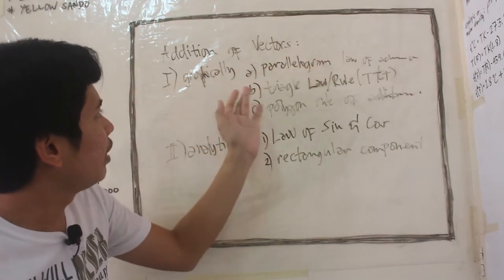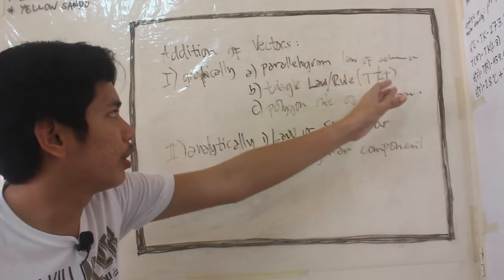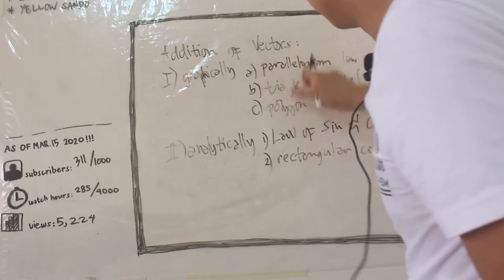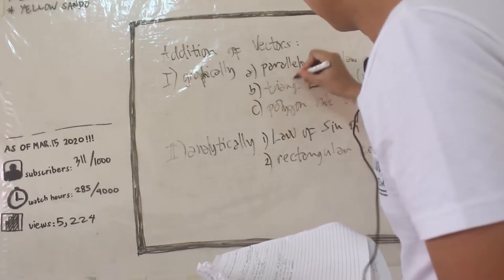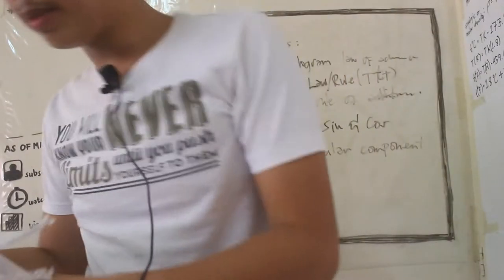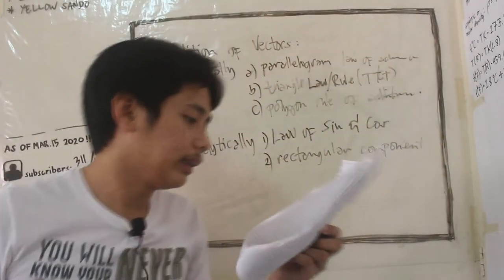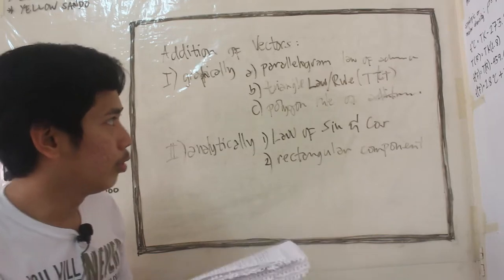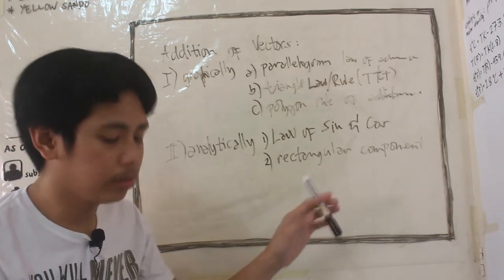Addition of vectors graphically: parallelogram law of addition, triangle - wrong spelling, ngayon triangle ko. Sorry guys, kulang lang po ng tulog. Triangle law or triangle rule, also known as the tip to tail rule.